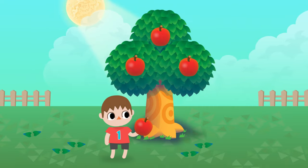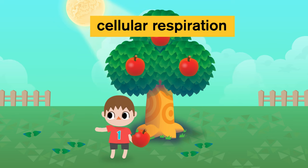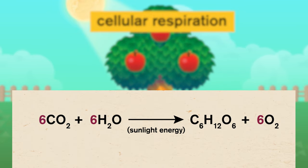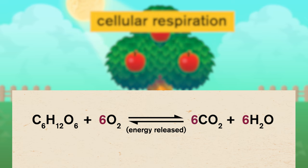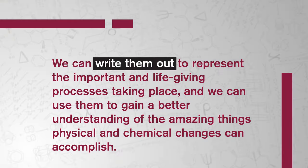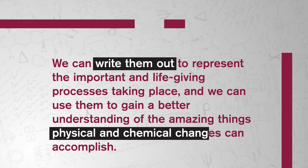Eating an apple completes the other part of this chemical reaction process, called cellular respiration. Your body converts the sugars from the apple, along with the oxygen you inhale, into energy and carbon dioxide. You'll notice the equation for cellular respiration is familiar — it's the photosynthesis chemical reaction we just discussed, but in reverse. We can write our equation out with a double-sided arrow to show this back and forth. Eating an apple allows us to produce reactants for future photosynthesis, so we and the tree coexist in a chemical reaction cycle that is mutually beneficial. Chemical reactions summarize the changes happening around us every day, and we can write them out to represent important and life-giving processes.